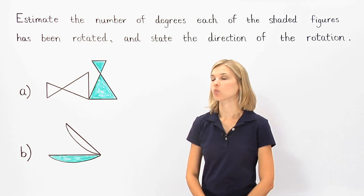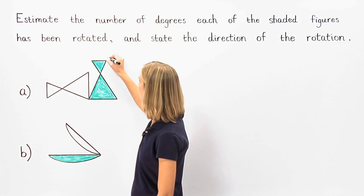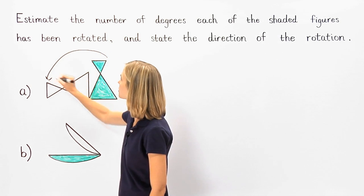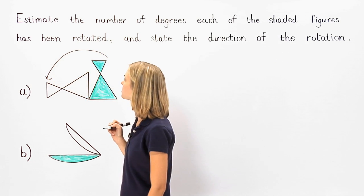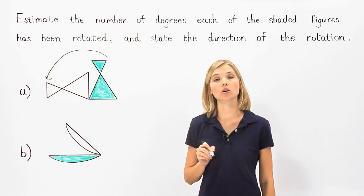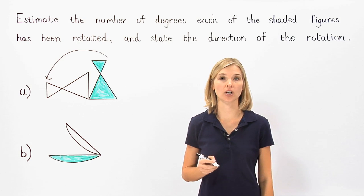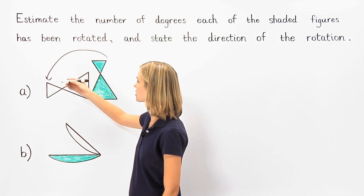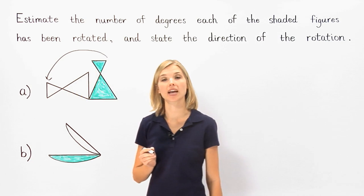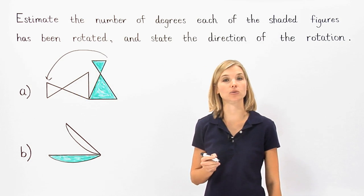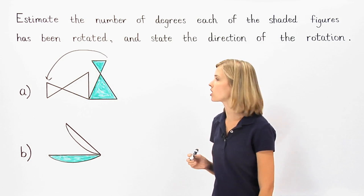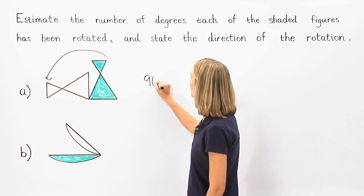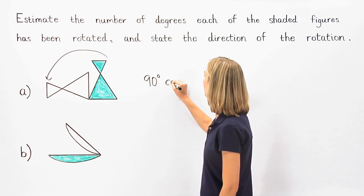In part A, we can see that the shaded figure has been rotated approximately a quarter turn to the left. Remember that a quarter turn is a 90 degree turn. And since the shaded figure has been turned to the left, we say that the rotation is counter-clockwise. So the shaded figure has been rotated 90 degrees counter-clockwise.